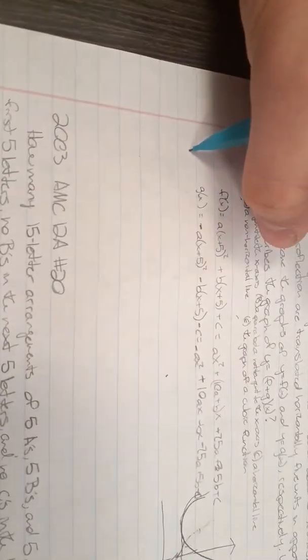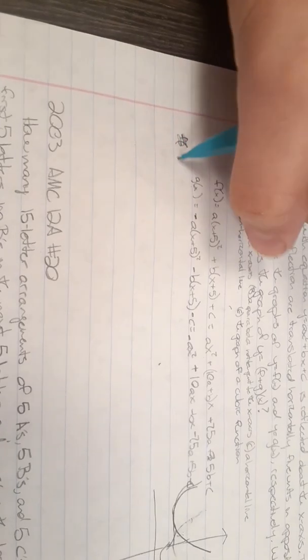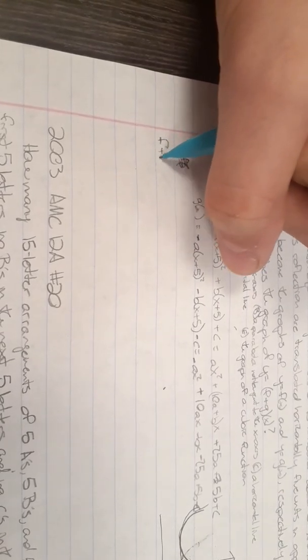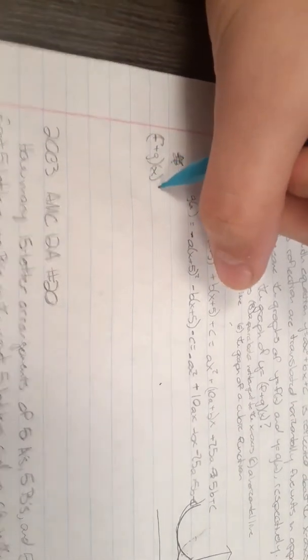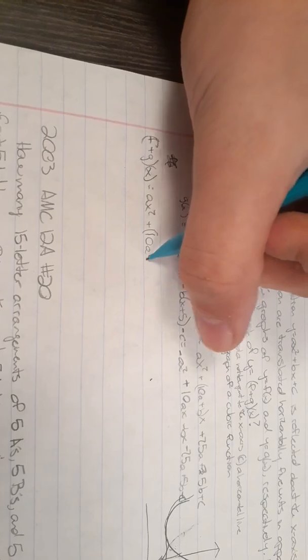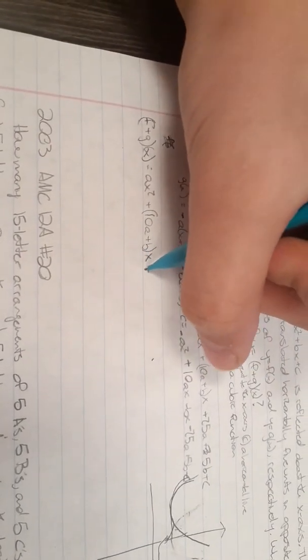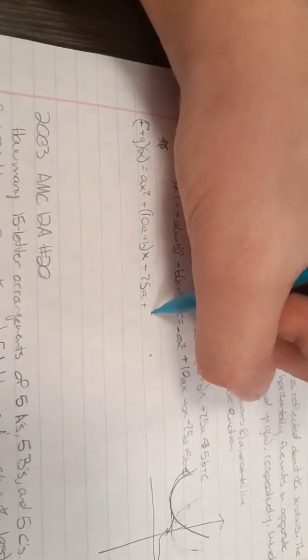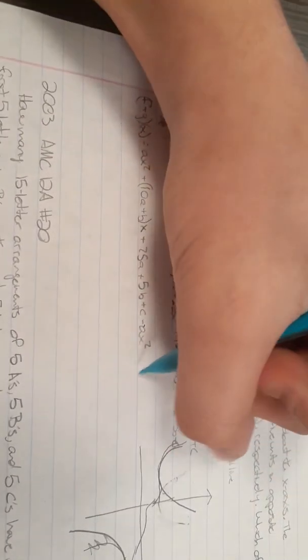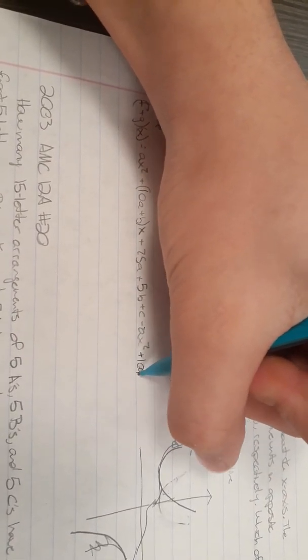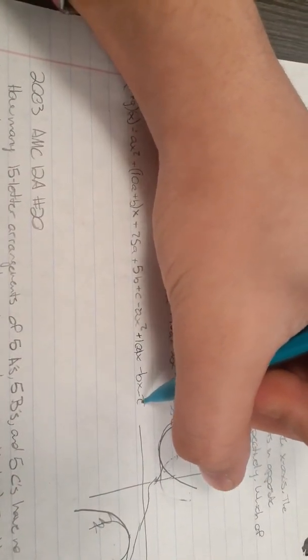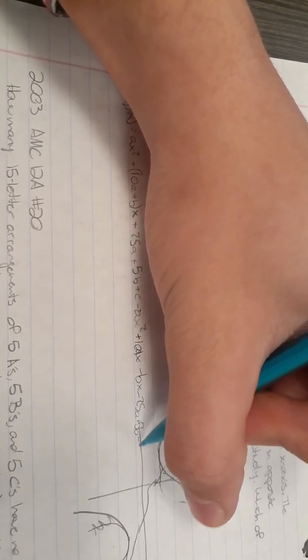So now, if you add the two up, I'm going to have to give myself some room over here. f plus g of x is going to be ax squared plus 10a plus b times x plus 25a plus 5b plus c, minus ax squared plus 10a minus b times x minus 25a plus 5b minus c.